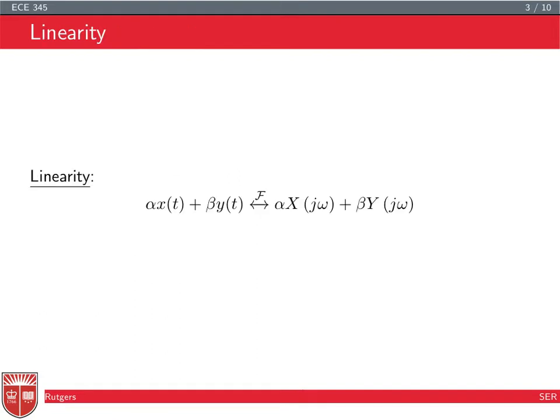The first important property, which you've also seen in all the transforms, is linearity — meaning the CTFT of the sum of two signals is the sum of the CTFTs. More generally, if a signal is a weighted sum of two signals, meaning alpha*x(t) plus beta*y(t), then the CTFT of it is alpha times the CTFT of x plus beta times the CTFT of y.